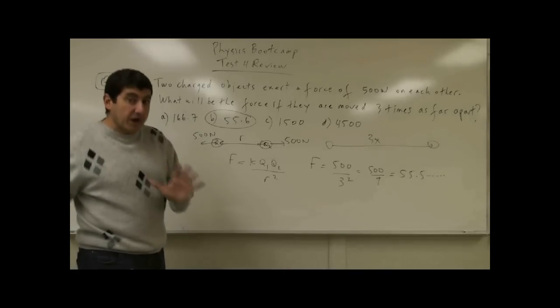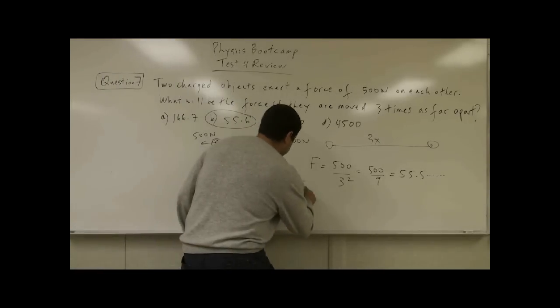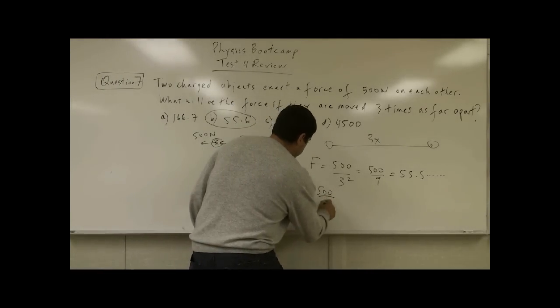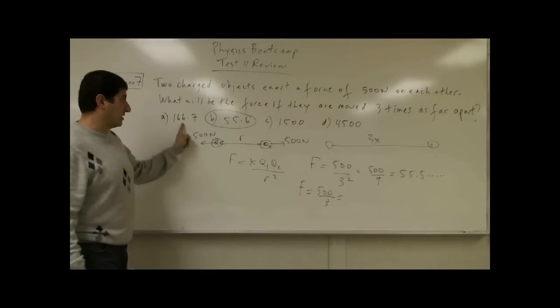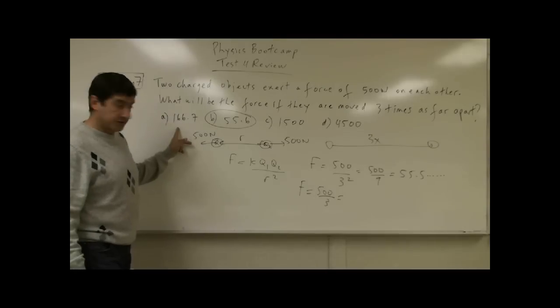If someone hadn't done that squared thing, then they would have put 500 over three. Then they would have gotten this answer, 166.7. So this is here on purpose.